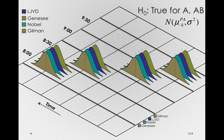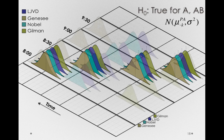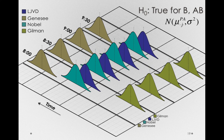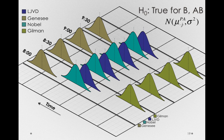Let's try another situation: H0 true for B (time of day effect) and for AB (no interaction), but H0 is false for the different routes. Here is one possible way this could be true. Notice the notation — normal distributions with purely additive means, because we have no interaction, and we're only representing the means differently on the basis of the j subscript for the route effects.